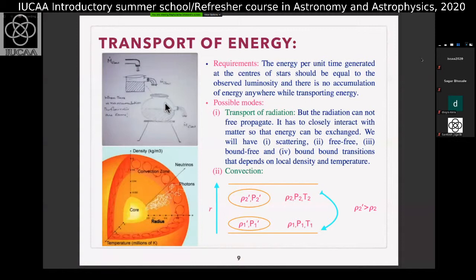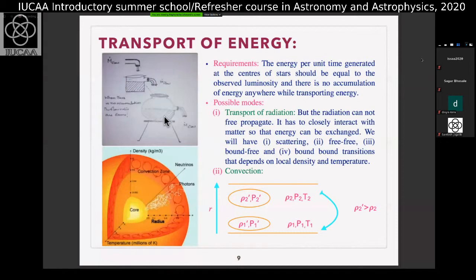What we are finding is that we received a lot of energy from a 6000 Kelvin outer surface, but it does not mean that energy is created there. The energy is actually flowing from the center outward. The requirement is that energy per unit time generated at the center of the star should equal the observed luminosity, with no accumulation of energy anywhere during transport. The most efficient way to transport energy is by radiation — that is the fastest way.